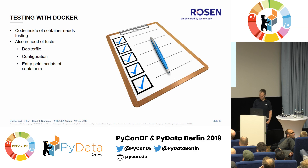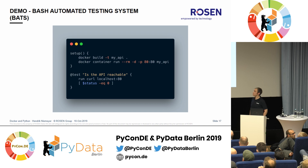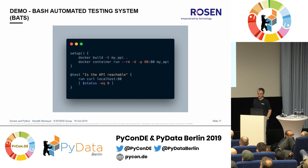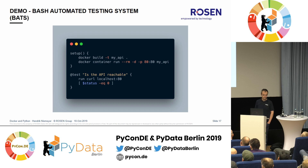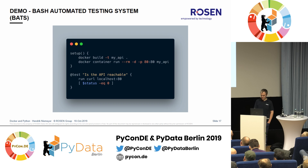One solution is using bash — bash has a testing framework called bats. This is relatively easy to set up because you're already using the Docker CLI to start containers. With a bash testing framework you have setup code that builds and runs your container, a test that runs curl against an endpoint and checks the exit code, and then teardown. But this can be tedious if you want to test JSON output — you have to escape all the quotes. Also the project is not so actively maintained; I think the last commit is from 2018.